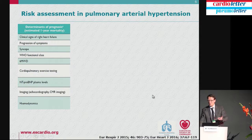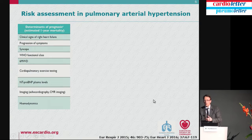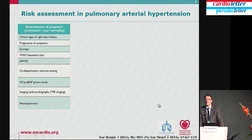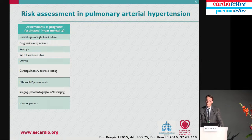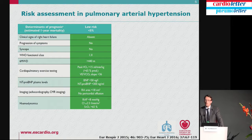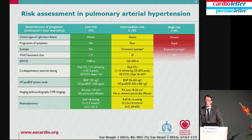When you have a patient classified in Group 1 PH, you must consider management. To do so in the best setting — like pulmonary embolism — you have to establish the risk. Risk assessment is key in the initial approach of PH patients. Based on literature and expert opinion, we subclassify patients into low risk, intermediate risk, and high risk PAH.